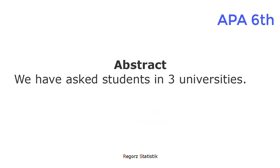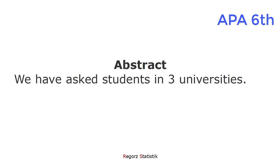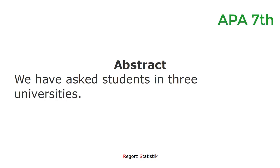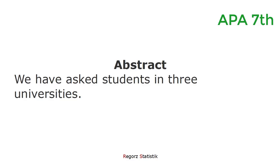In APA 6, there was a special way numbers were written in the abstract. Normally, numbers from 0 to 9 are written in words and above 9 in numerals. But in the abstract, the rule was that even numbers between 0 and 9 were written in numerals. With APA 7, this rule doesn't hold anymore. Now the numbers in the abstract are written the same as in the rest of the paper.